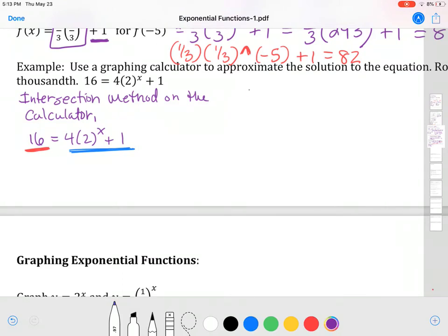So, if we use our graphing calculator to do this, what we're going to do is I'm going to go to my y equals button where I graph functions. If I have anything in there, I'm going to clear it out. Then, in y1, I'll color code this. In your y1, I want you to put 16. And in your y2, I want you to put four times two to the x plus one. And then you're going to graph it.